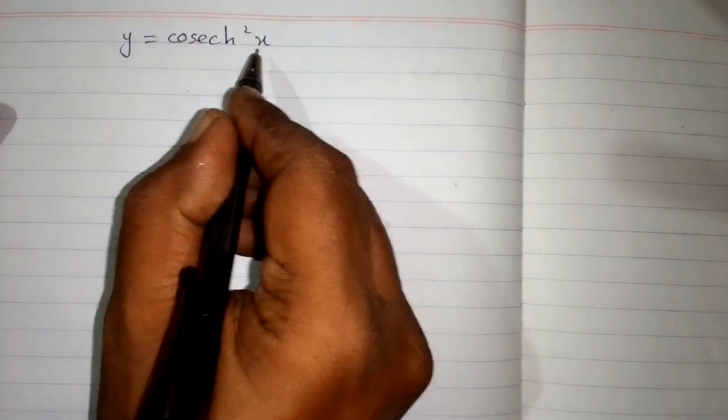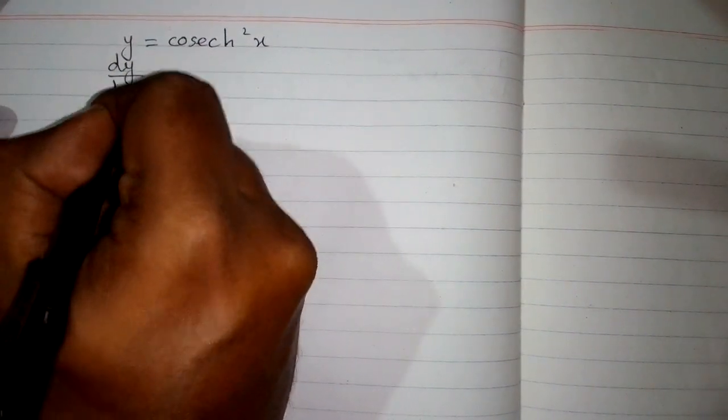In this video we will find the derivative of the function y equals hyperbolic cosec squared x. First we will differentiate both sides with respect to x.